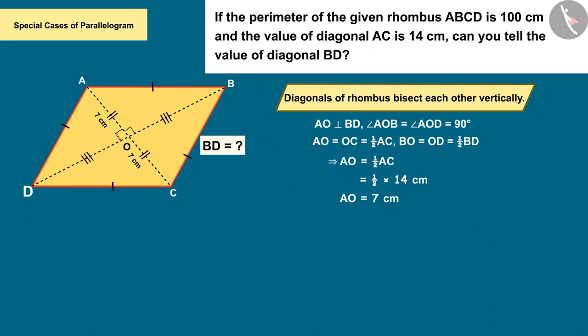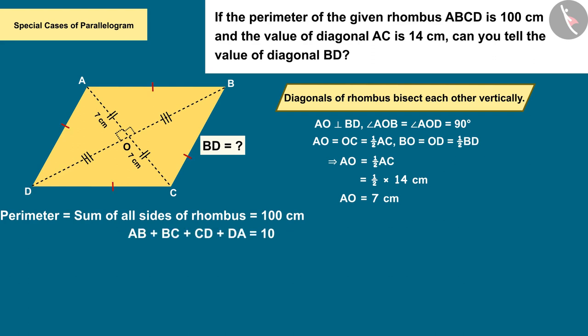Using which we find the measure of side AB, which is 25 centimeters.